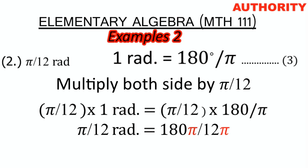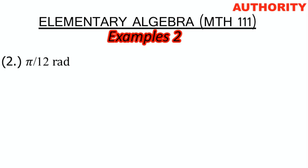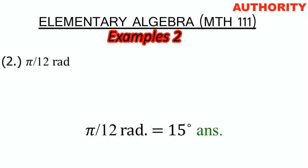180 times π gives us 180π, and π times 12 gives us 12π. The π cancels, leaving 180 over 12. 180 divided by 12 gives us 15 degrees. So the expression of π/12 radians in degrees is 15 degrees.